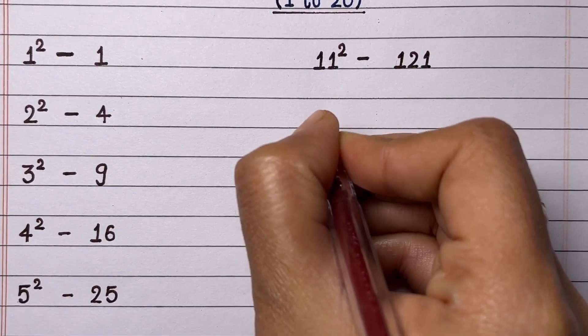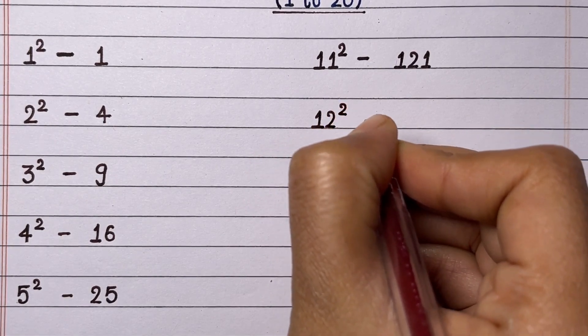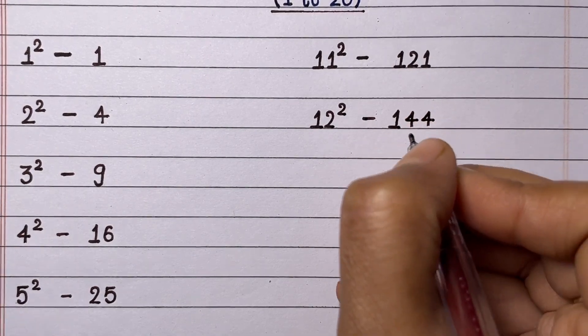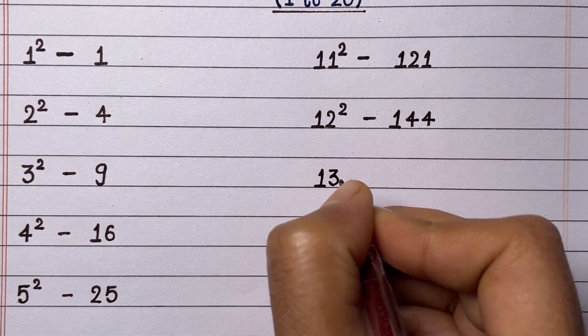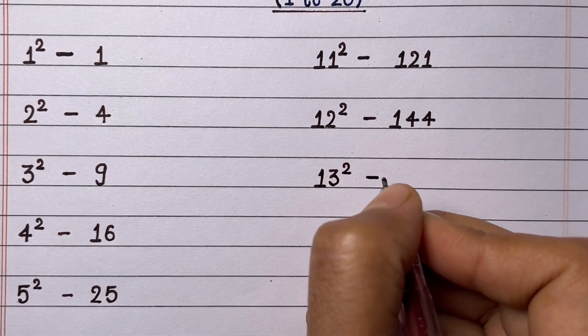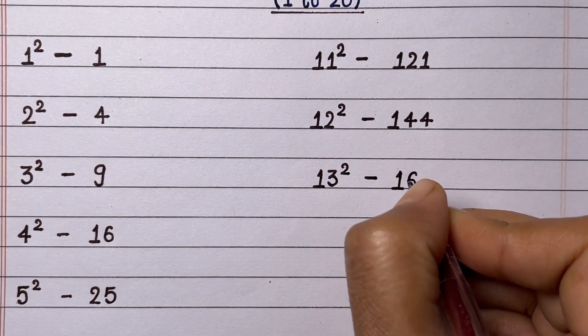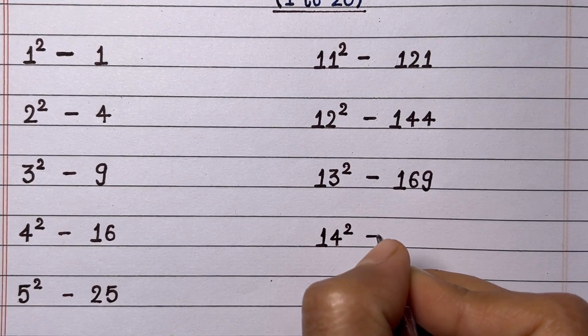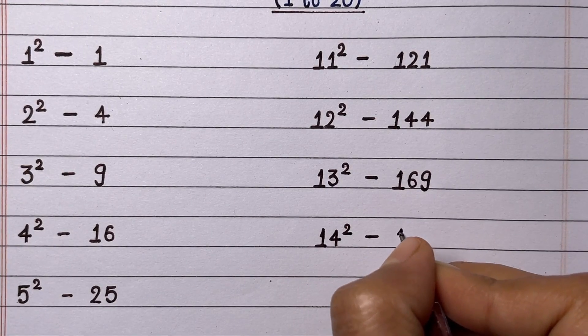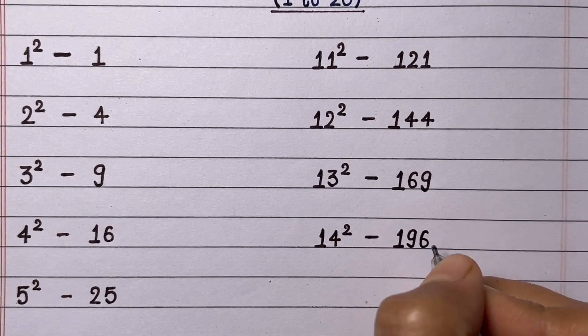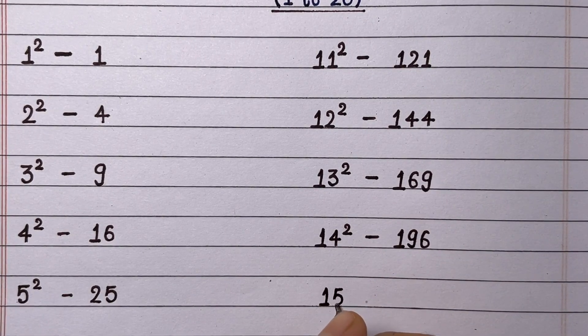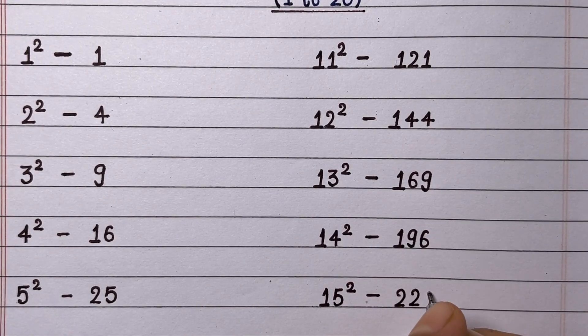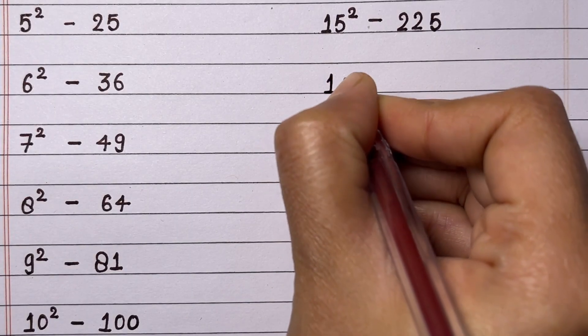Square of 11 is 121. Square of 12 is 144. Square of 13 is 169. Square of 14 is 196. Square of 15 is 225.